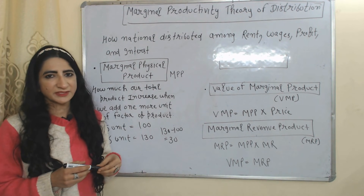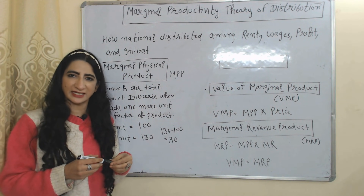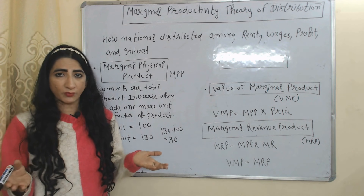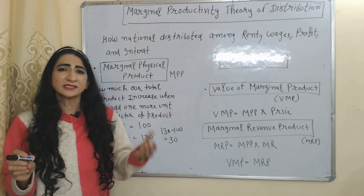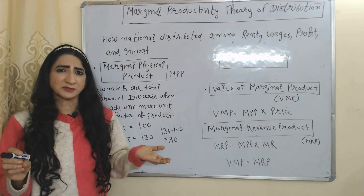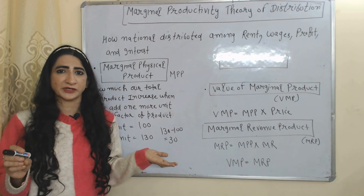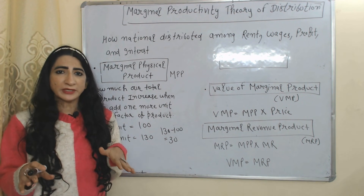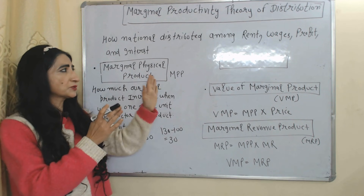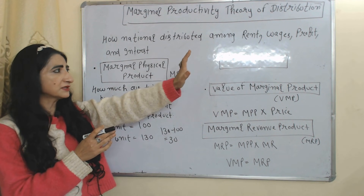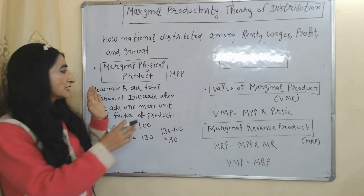Hello everyone, my name is Minister Ati. I hope you all are staying healthy. Today we are going to talk about the Marginal Productivity Theory of Distribution. This theory mainly explains how we can decide the price for factors of production, and how we can distribute national income among rent, wages, profit, and interest.